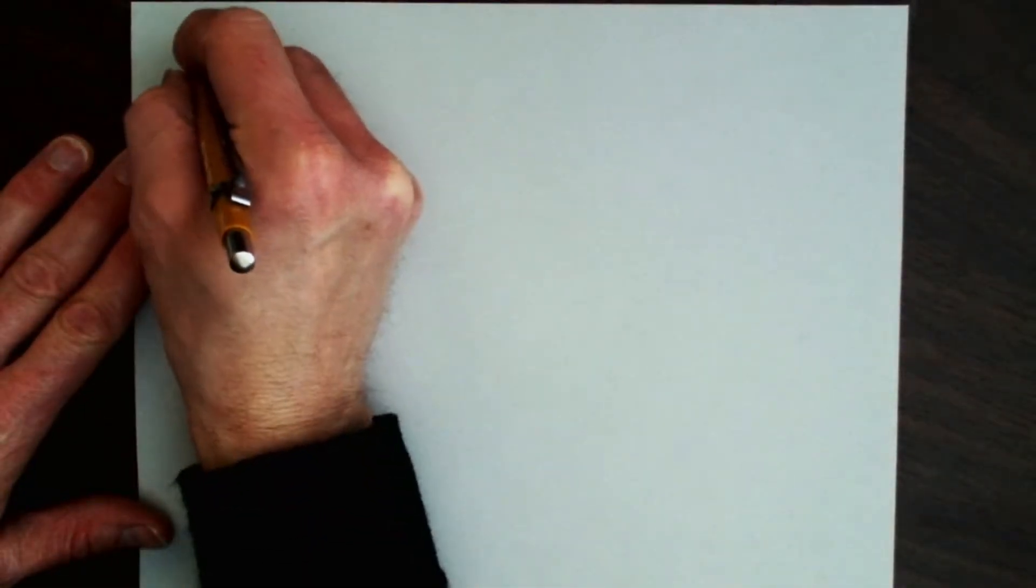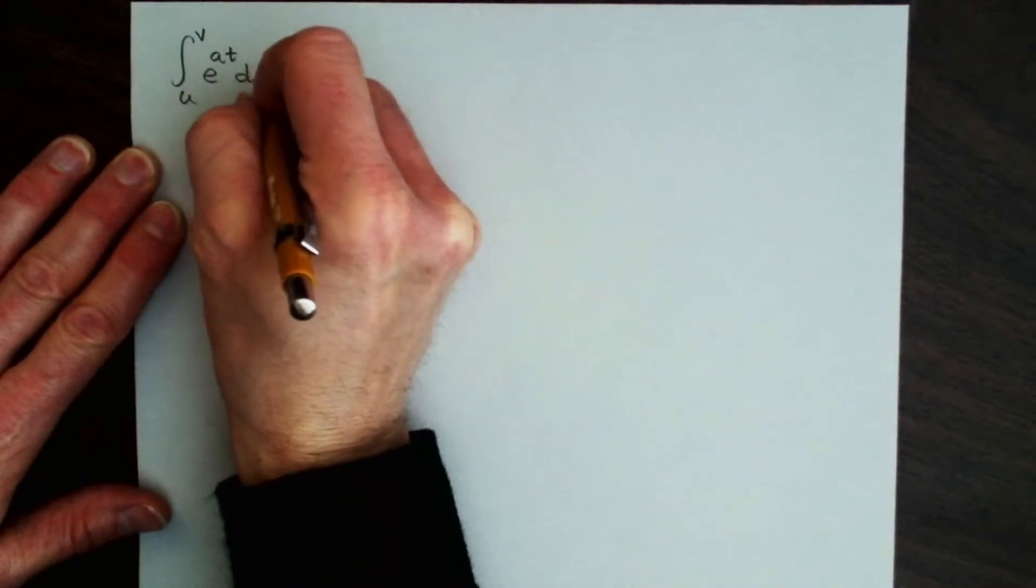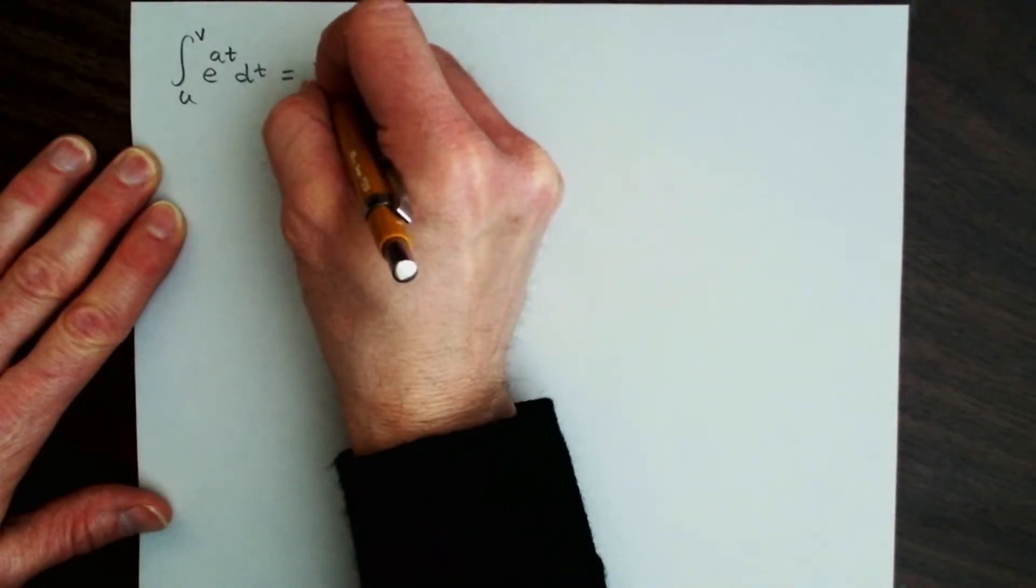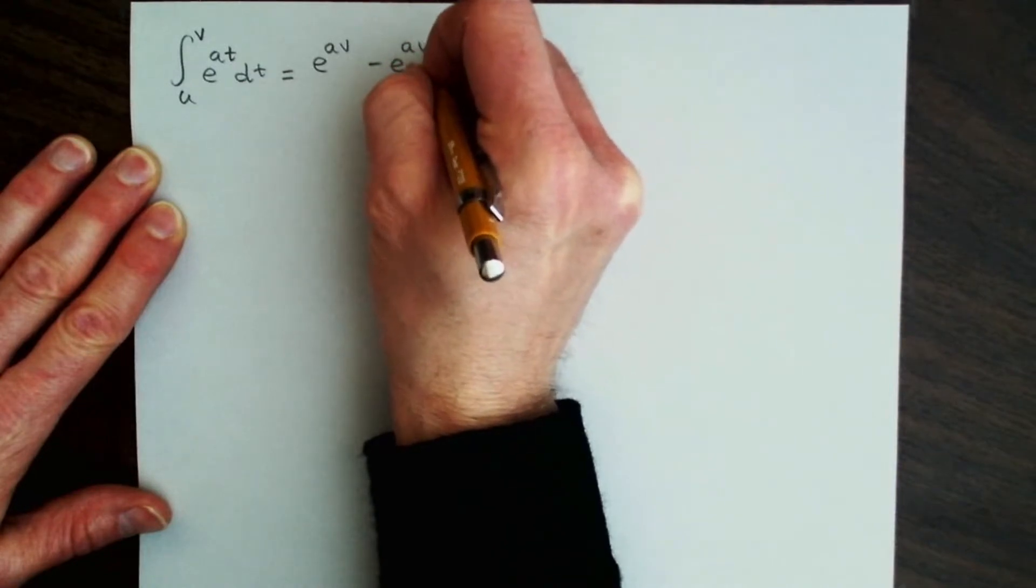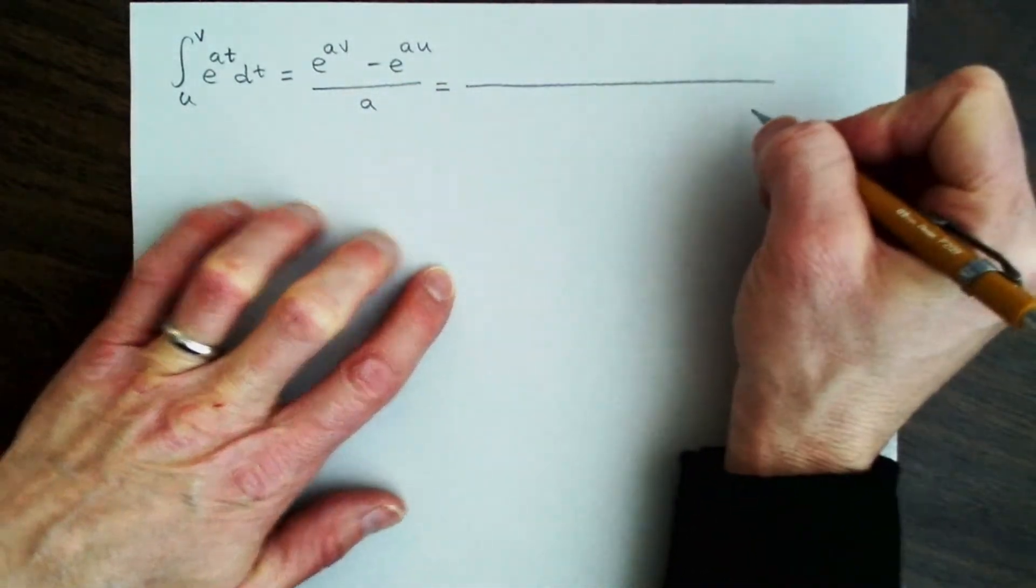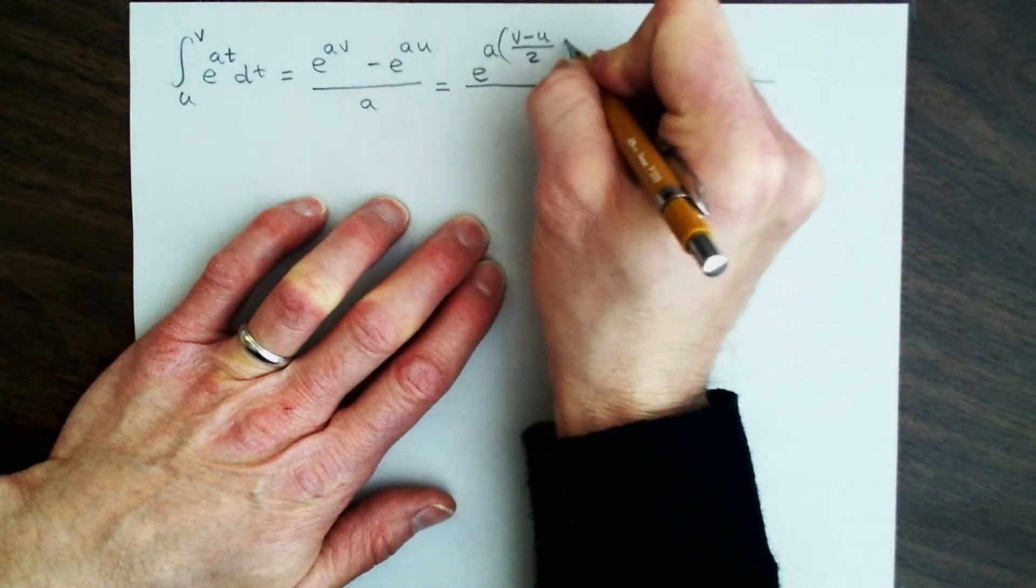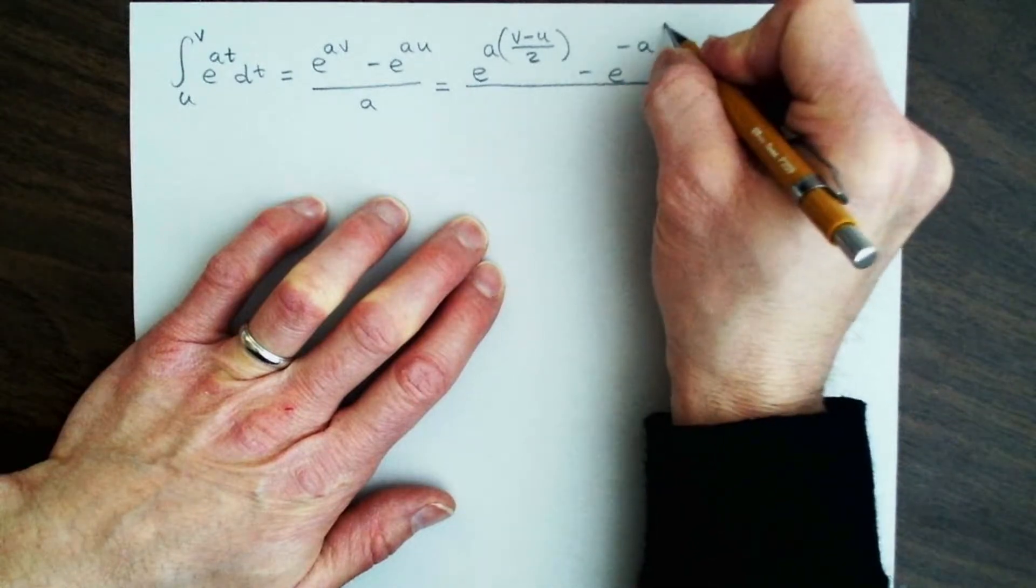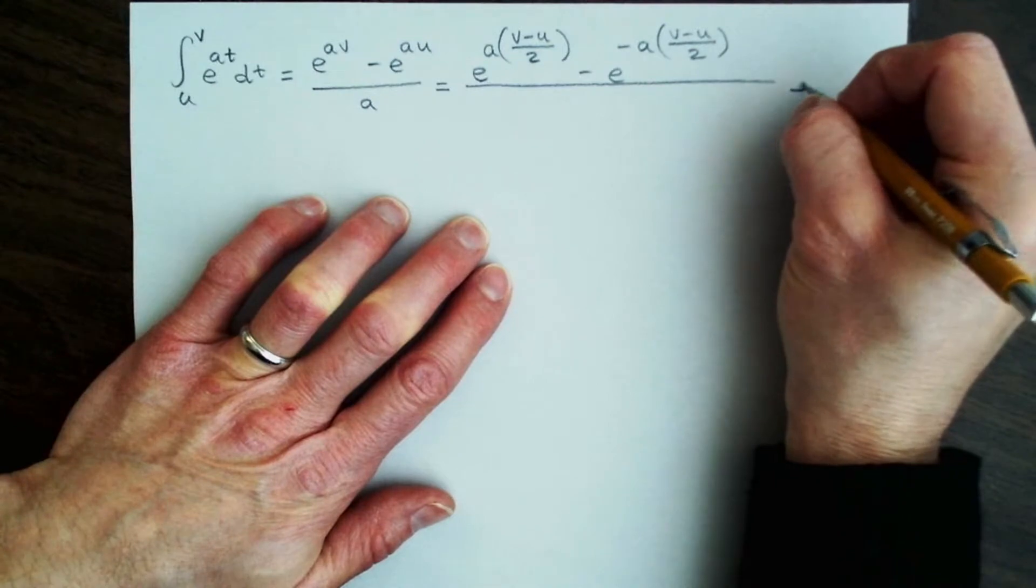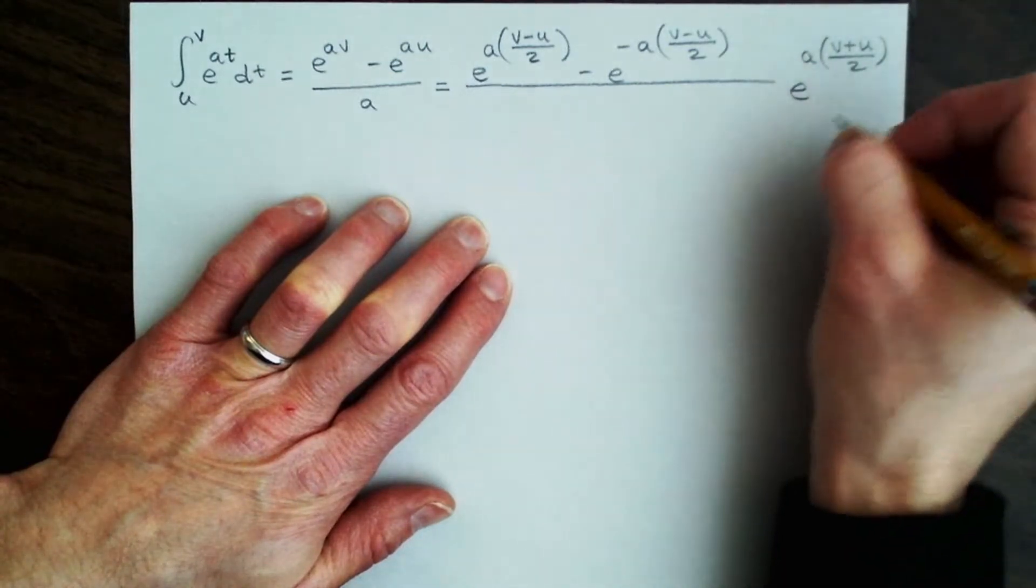All right, let's take a look at one more integral that appears very often. Let's begin again with this integral from u to v, e to the at dt. And we know that this is going to be e to the av minus e to the au, divided by a. And I wanted to point out another form that we can put this in that's often useful. Let's write this as e to the a times v minus u over 2, minus e to the minus a times v minus u over 2, times e to the a times v plus u over 2, and this is over a.